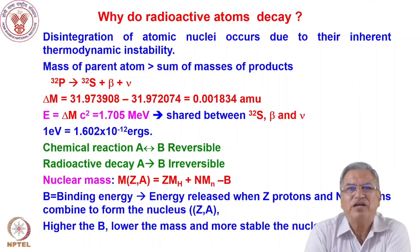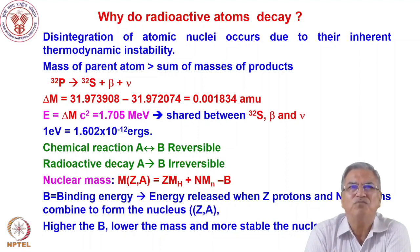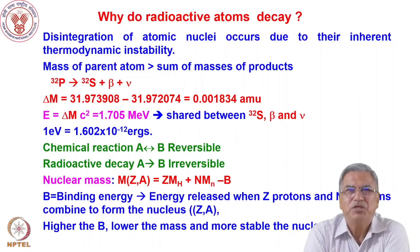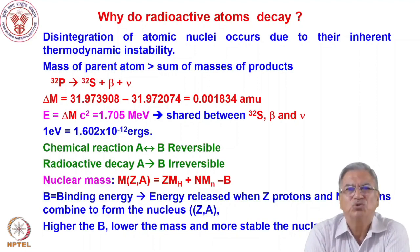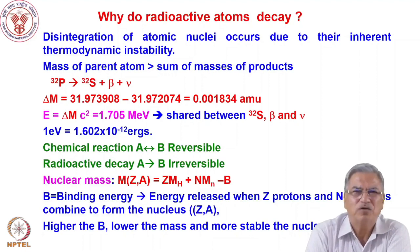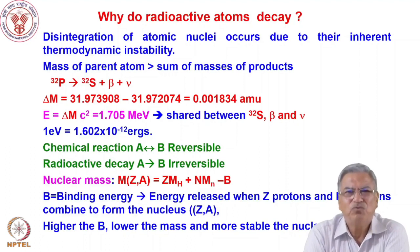Now let us come to the fundamental question: why do radioactive atoms decay? The decay of a radioactive atom is essentially because of the thermodynamic instability of the atom. If the mass of the parent atom is more than the sum of the masses of the products, decay will occur. This is like water in a dam — when the floodgates are opened, water gushes downstream because it has high potential energy. Similarly, if a nucleus has higher mass than some other nucleus and there is a pathway — alpha decay or beta decay — it will decay due to thermodynamic instability.